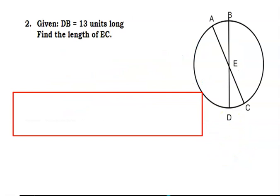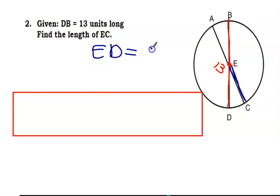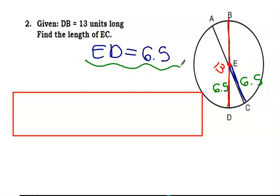Number two: given that DB is 13 — so this whole thing is 13, and it's a diameter because it goes through center E — what is the length of EC? Well, ED is half of 13, which is 6.5. And if all radii are congruent, EC also has to be 6.5, because they're both radii. So ED equals 6.5 and EC also equals 6.5 units long.